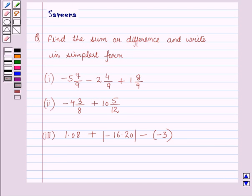Hello and welcome to the session. In this session we will discuss a question which says: find the sum or difference and write in simplest form. First part: minus 5 and 7 by 9, minus 2 and 4 by 9, plus 1 and 8 by 9. Second part: minus 4 and 3 by 8, plus 10 and 5 by 12. Third part: 1.08 plus the absolute value of minus 16.20, minus of minus 3. Now let us start with the solution.